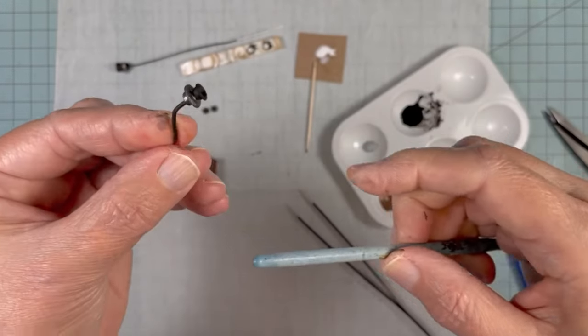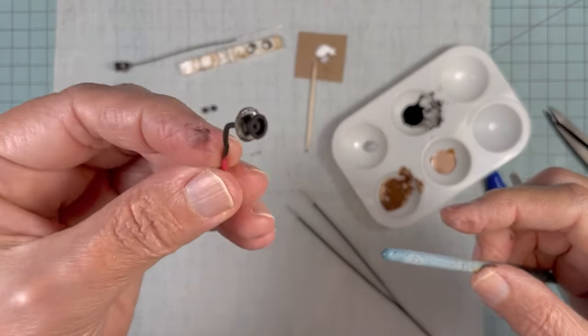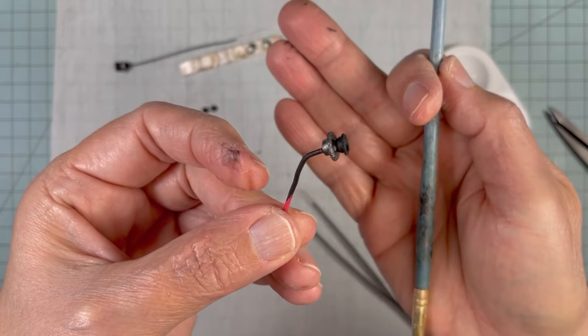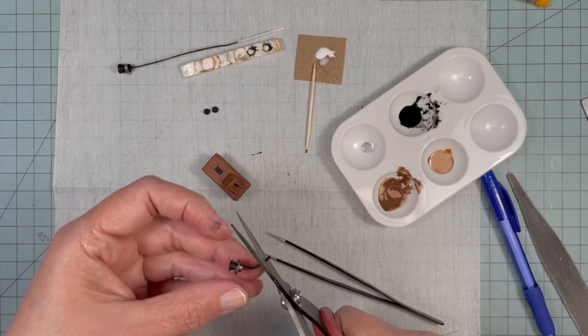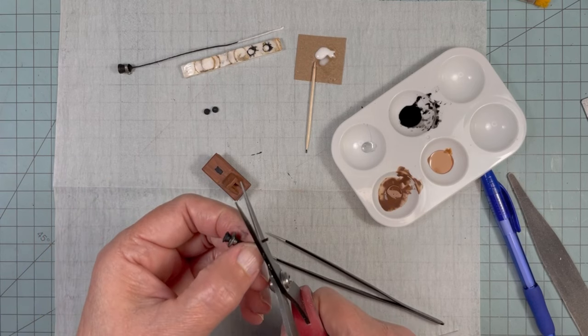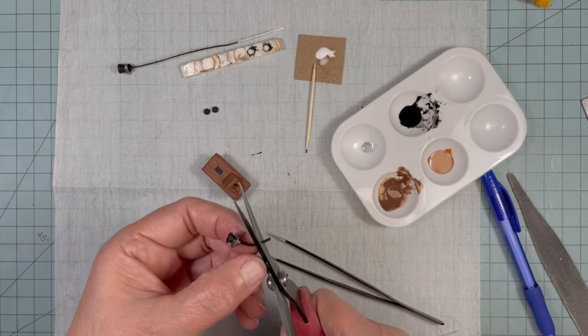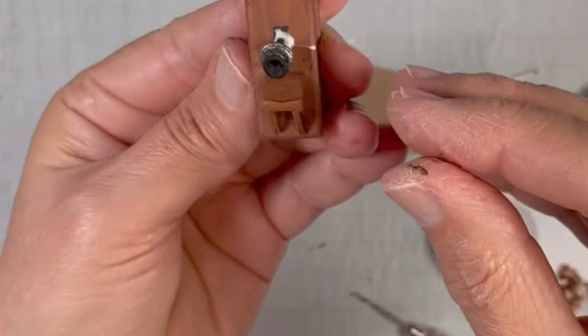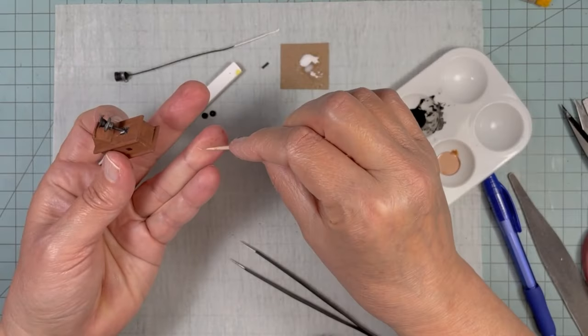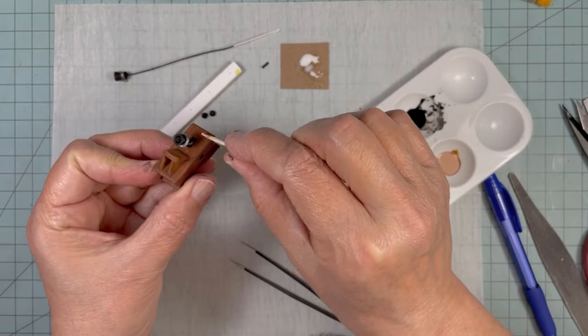I'm bending the mouthpiece wire across a paintbrush to get a little bend in it. Trimming off some of that extra wire. And here I'm gluing it on, kind of messy with the glue. Cleaning all that glue off.